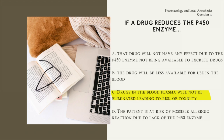The answer is C: drugs in the blood plasma will not be eliminated, leading to a risk of toxicity. The P450 enzymes help metabolize and eliminate drugs from the blood plasma. If their actions are decreased, we run the risk of drugs remaining in the blood plasma and potentially reaching toxic levels. A is not right because reduced P450 enzyme doesn't mean the drug won't have an effect — it means the drug won't be properly eliminated. B is wrong because the drug will still be available in the blood. D is wrong because the P450 enzyme does not have to do with allergic reactions.